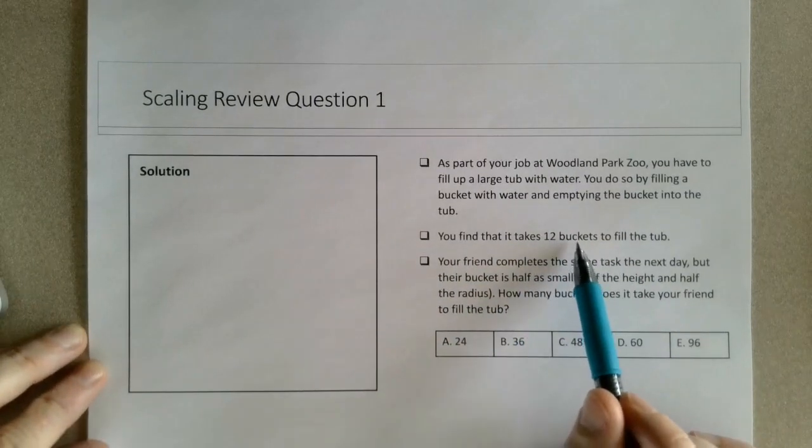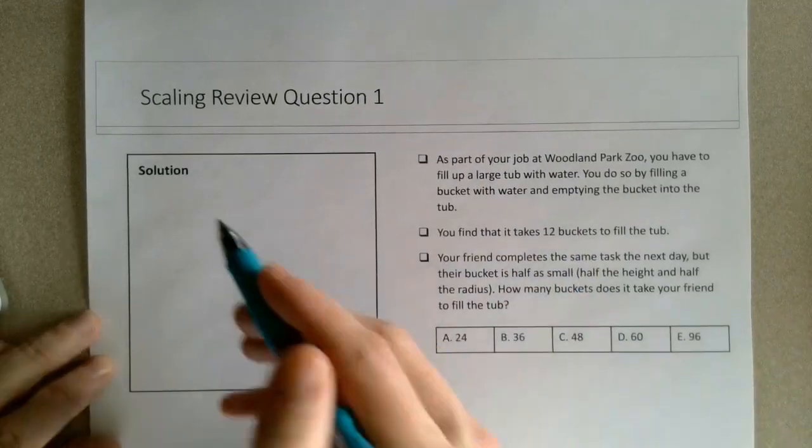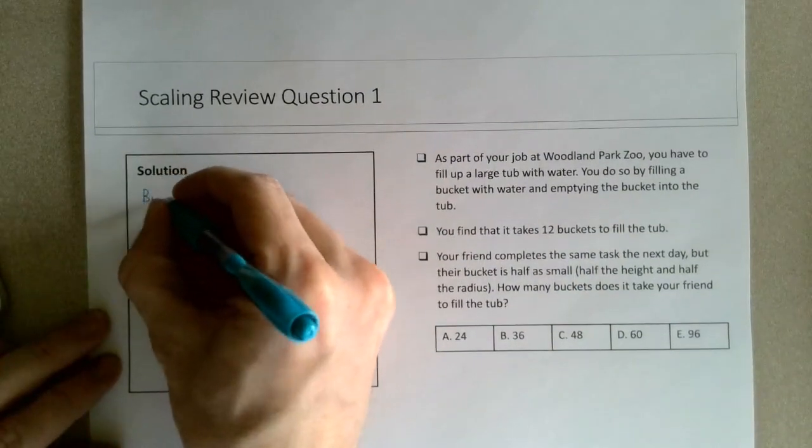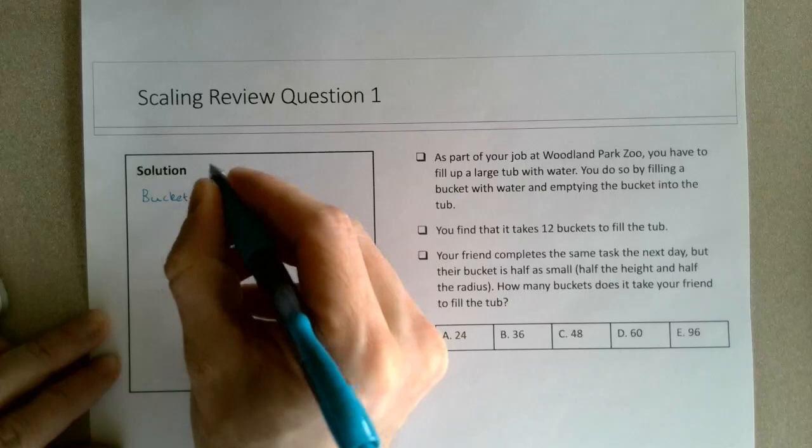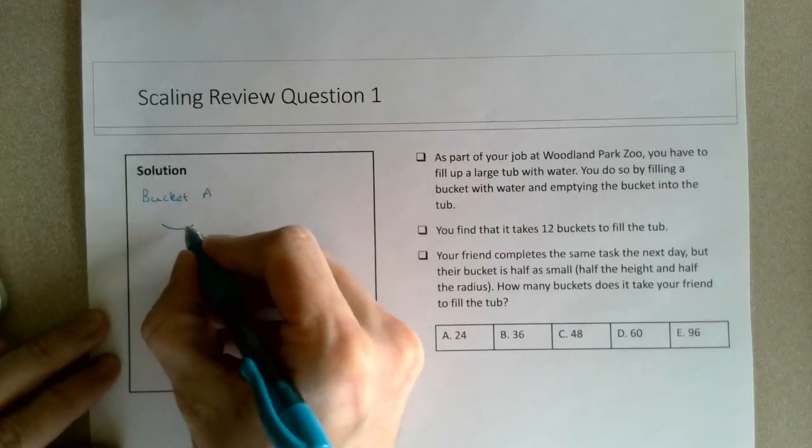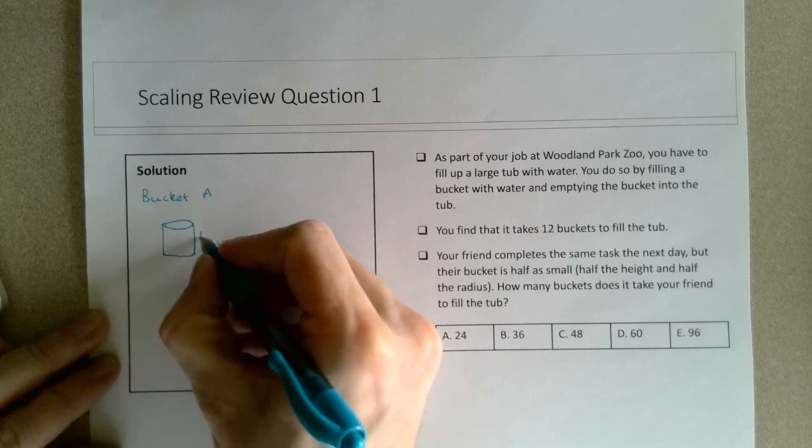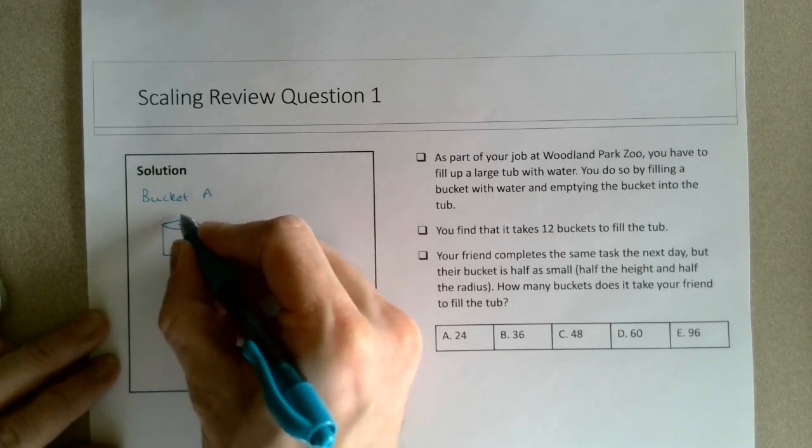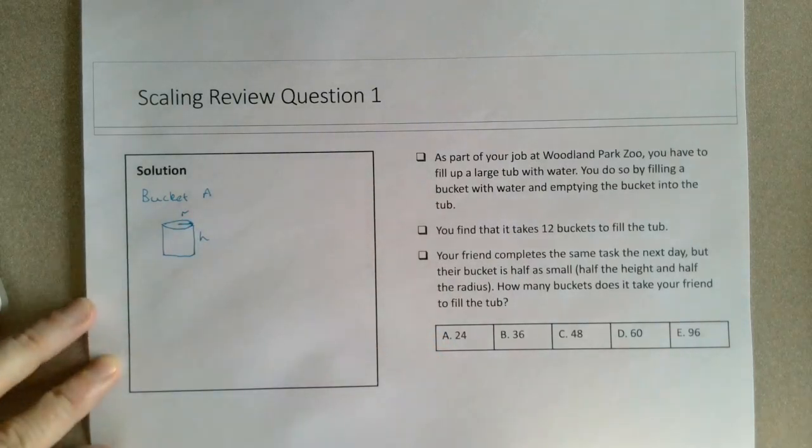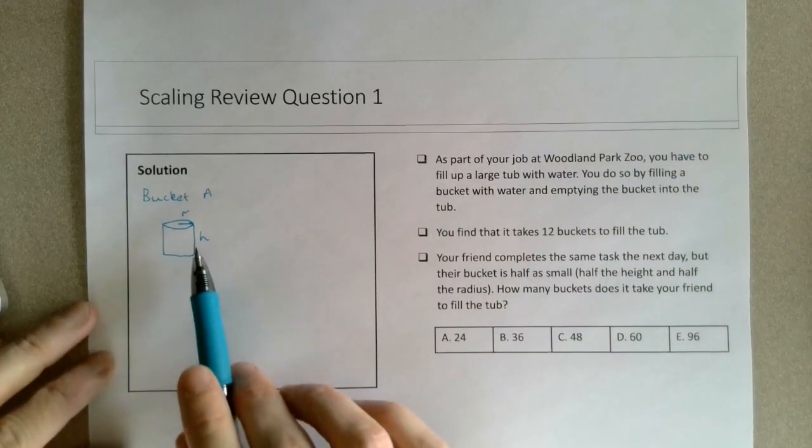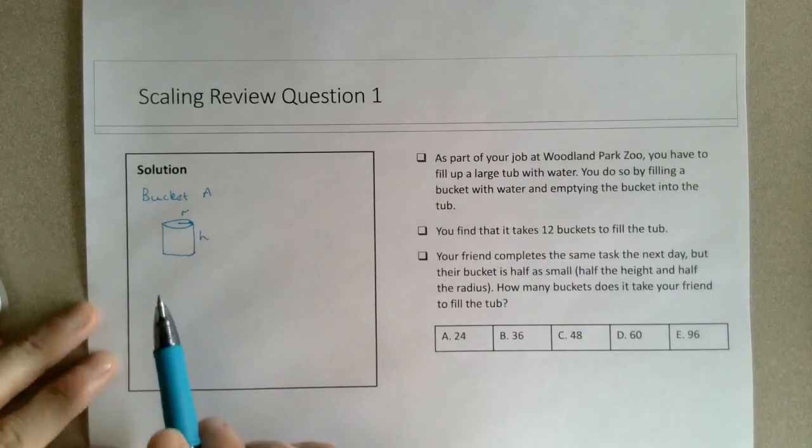So I might refer to this original bucket as bucket A. You can imagine that bucket A, I'll give this bucket a height of h and a radius r, and we know that the volume of the tub is equal to 12, 12 times the volume of this particular bucket.